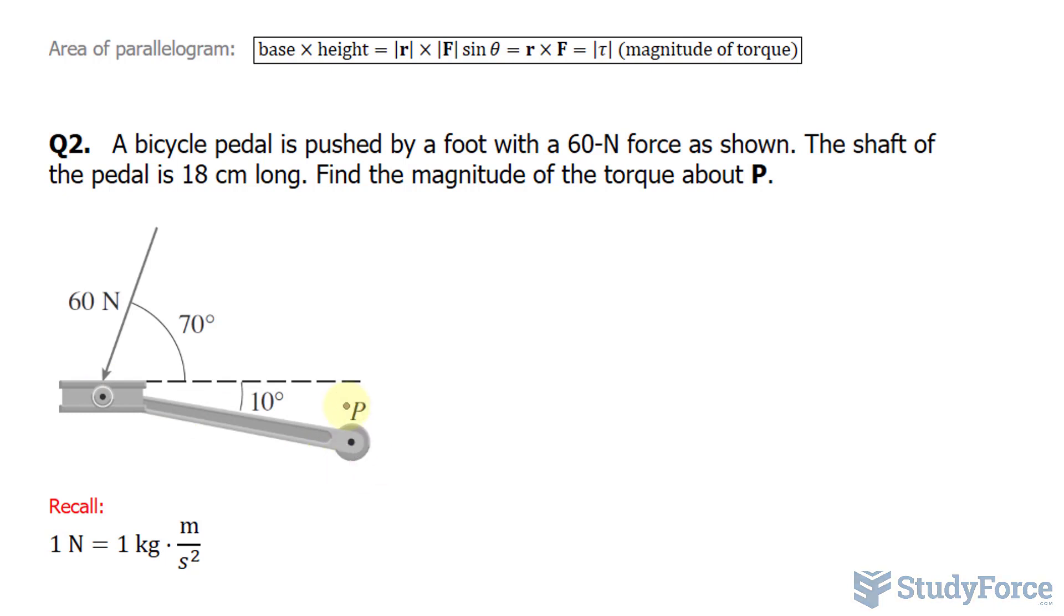Once again, we'll use the formula that we used in the previous example, where the torque, the magnitude of the torque, is equal to R times F times sine theta. The angle here is 70 plus 10, that's 80.